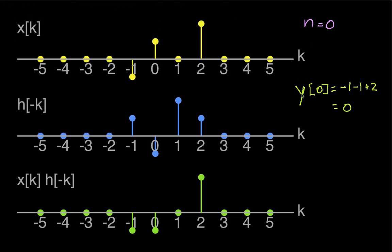We had come up with the value of y of zero. And so basically at this point we'll just keep going on through different values of n and see what we get.